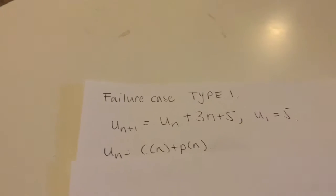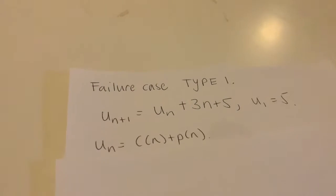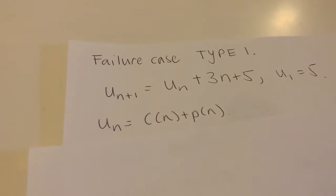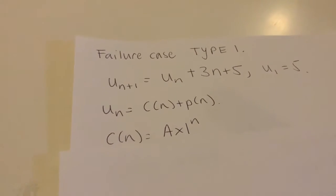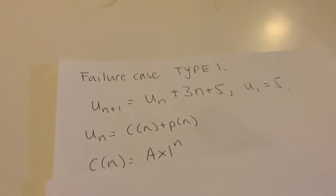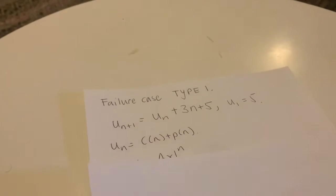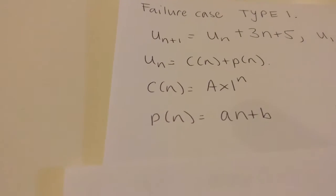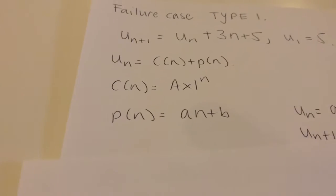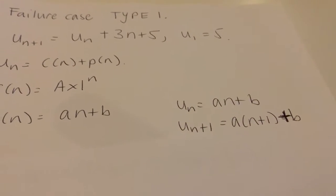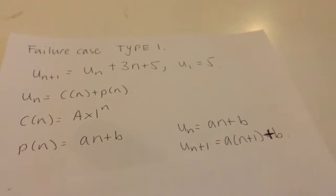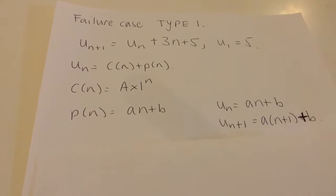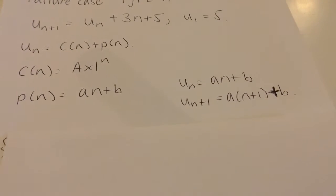I set off with my general solution as my complementary function plus my particular solution. My complementary function is capital A times 1 to the n. My particular solution, because it's linear, is of the form an plus b. So my n-th term is an plus b, and my (n+1)-th term is going to be a(n+1) plus b.